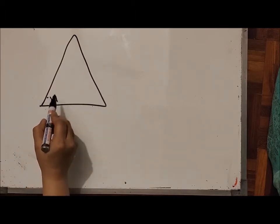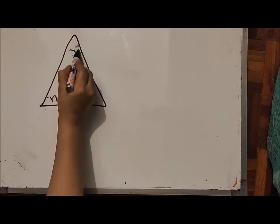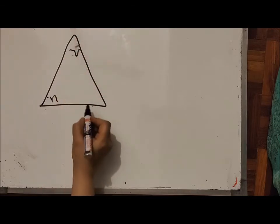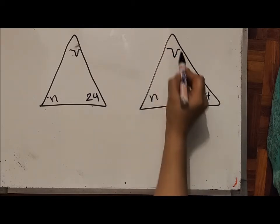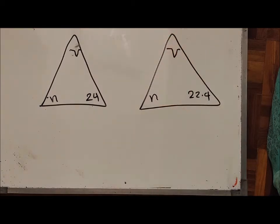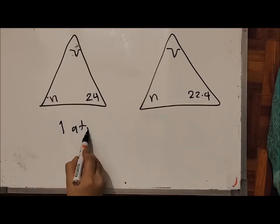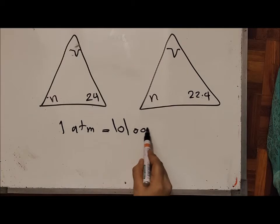We have two triangles for gases. For RTP: V and n with constant 24. For STP: V and n with constant 22.4. Under STP, temperature is 273.15 K and pressure is 1 atm. Under RTP, temperature is 298 K and pressure is 1 atm. One atmosphere equals 101,000 Pascal.